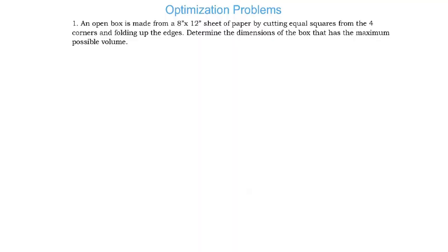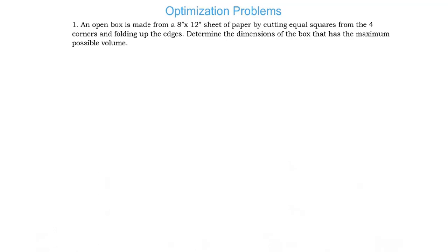This video is about optimization problems in calculus. For number one, an open box is made from an 8 inch by 12 inch sheet of paper by cutting equal squares from the four corners and folding up the edges. Determine the dimensions of the box that has the maximum possible volume.